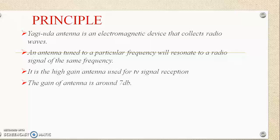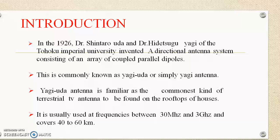Now we are going to discuss the introduction. In the year 1926, Dr. Shintaro Uda and Dr. Hidetsugu Yagi of Japan University invented a directional antenna system consisting of an array of coupled parallel dipoles, commonly called the Yagi-Uda antenna or Yagi antenna. It is the commonest kind of terrestrial TV antenna found on the rooftops of houses, usually used at frequencies between 30 MHz and 3 GHz, covering distances of about 40 to 60 kilometers.